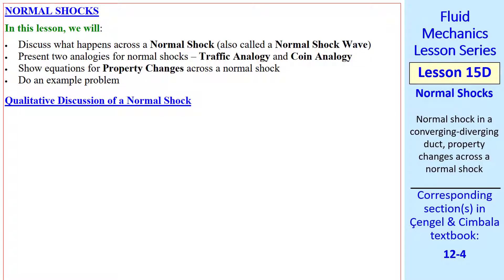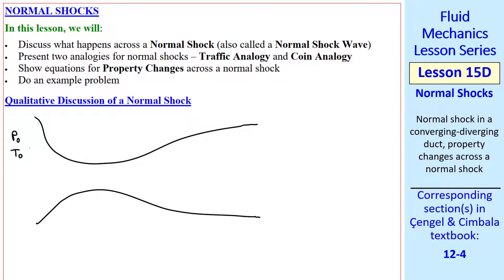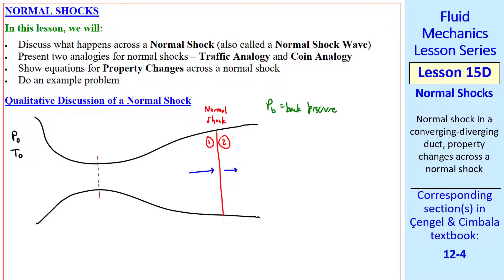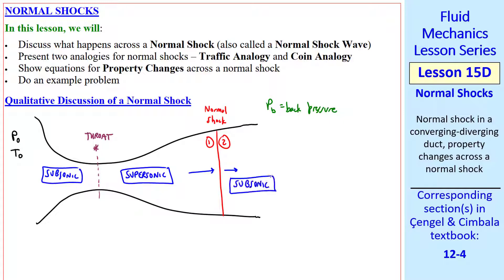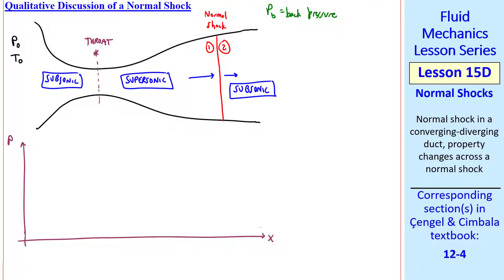First, a qualitative discussion of a normal shock. Consider a converging-diverging nozzle with stagnation pressure and temperature in a large upstream tank. Pb is back pressure, and at some particular back pressure, suppose we get a normal shock at this location. We always let one be upstream of the shock and two downstream of the shock. In this flow, we have sonic conditions at the throat, or the minimum area. The flow is subsonic before the throat, supersonic after the throat, right up to the shock, and then subsonic again downstream of the shock.